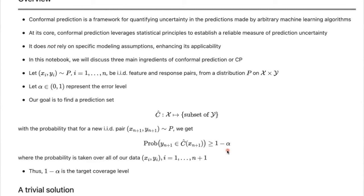There are two things here: 1 minus alpha is the target coverage level, because we want to cover the prediction set. The second thing is that this probability is taken over all of our data — meaning the n data points we have plus the test data point. That's why the index i goes from 1 to n+1. We always need to keep in mind that we want to find a prediction set such that the probability it contains the actual output is at least 1 minus alpha.